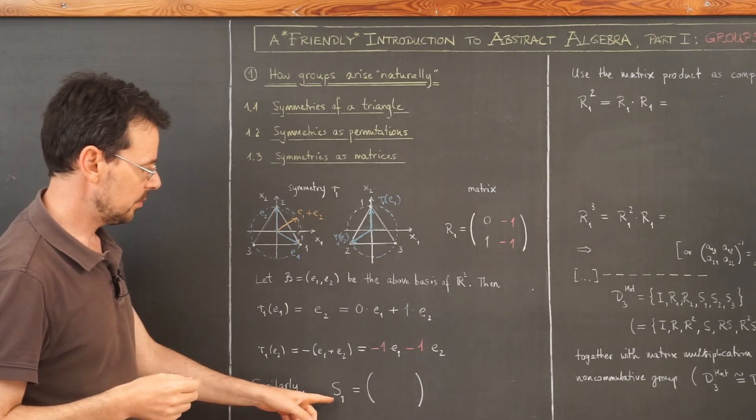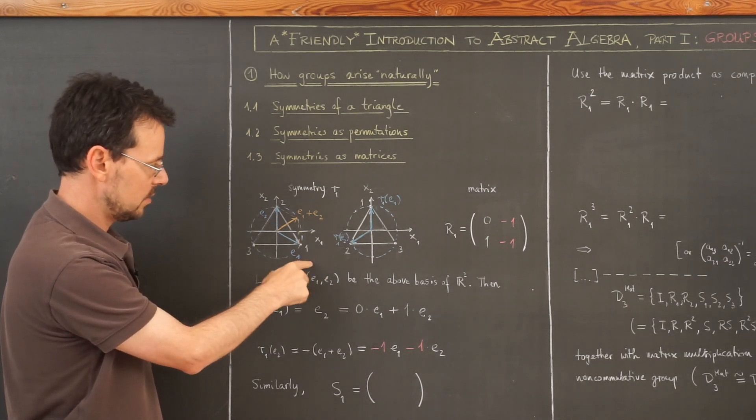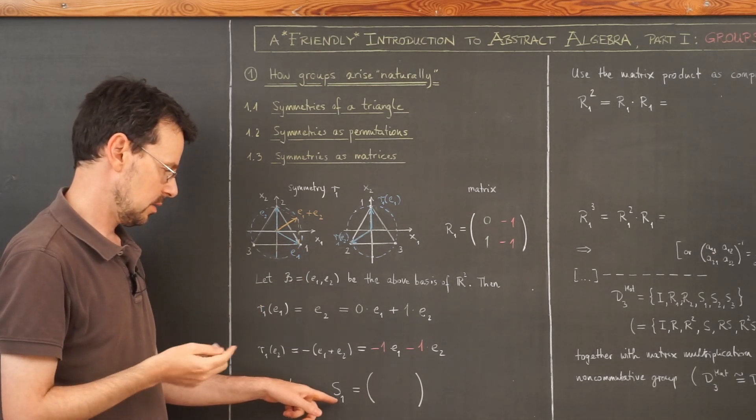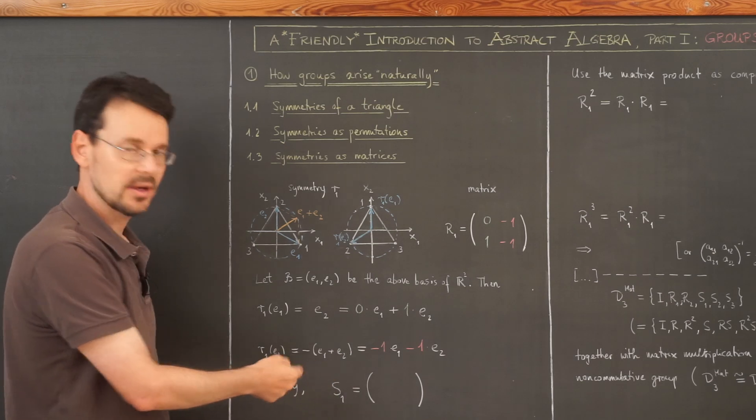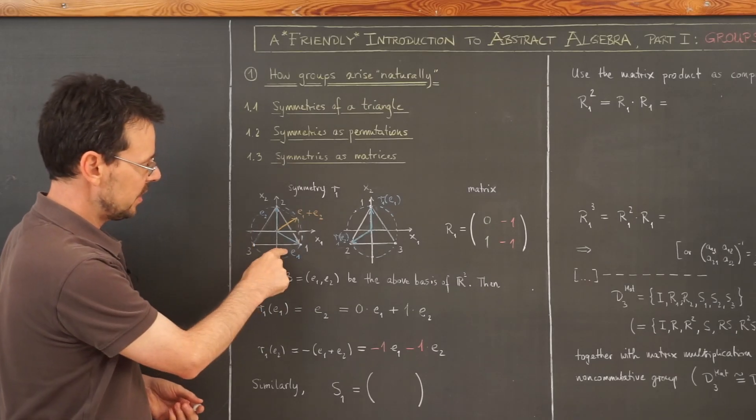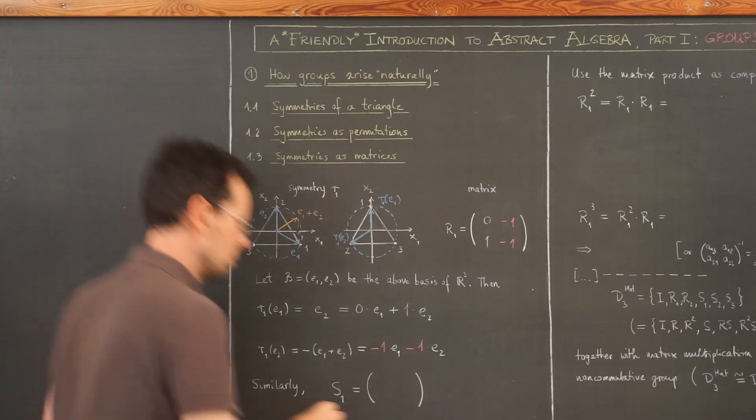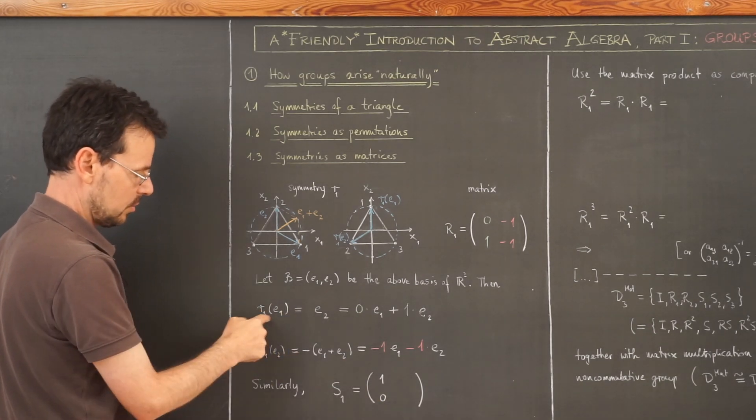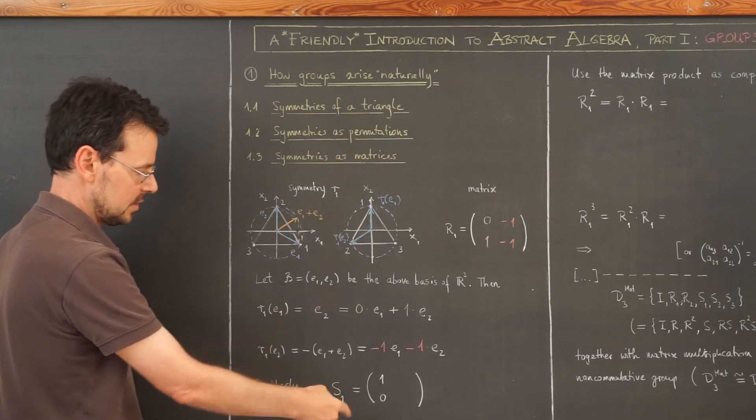Let's do one more. For example, we take the reflection about this axis here, the symmetry axis that goes through vertex one. Again, if you're wondering why I take the letter S, R for rotation and reflection are the same in English. This here comes from the German Spiegelung, which starts with an S. So what happens to basis vector E1 if I reflect about this axis? Well, of course, nothing. It stays invariant. So we have 1 0 because the image of E1 under small s1 is E1 itself, which is 1 times E1 plus 0 times E2. So this is the first column.